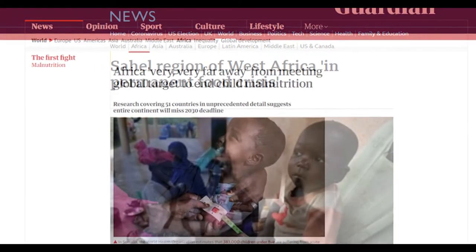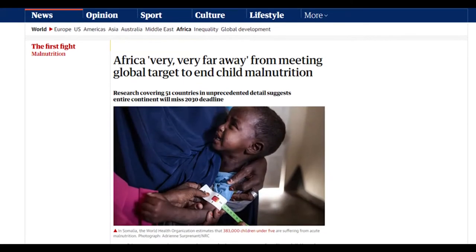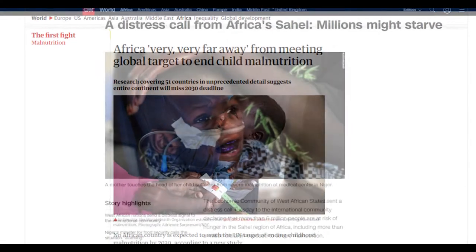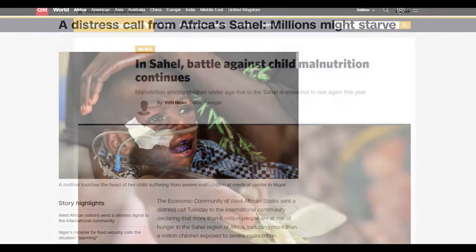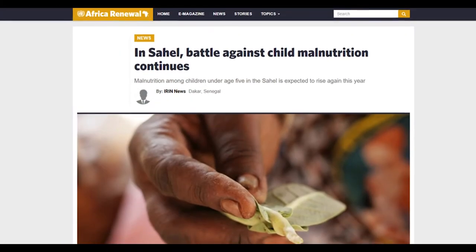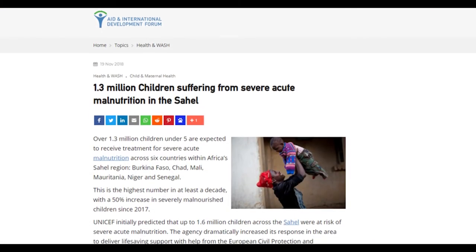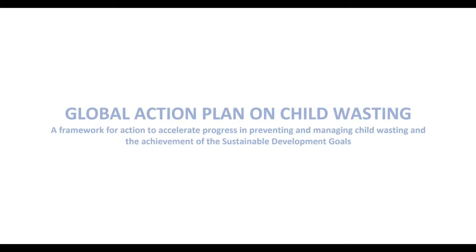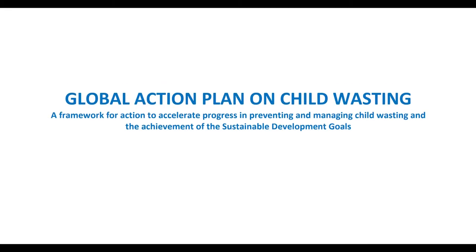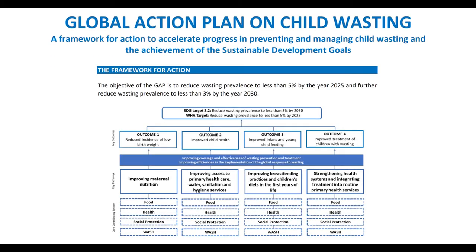The problem of acute malnutrition and childhood wasting is an increasing global public health problem and one of the main challenges of our time. In March 2020, several UN agencies launched a global action plan to address child wasting, the most common form of acute malnutrition.